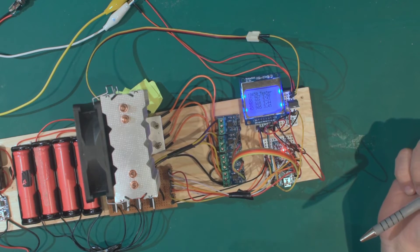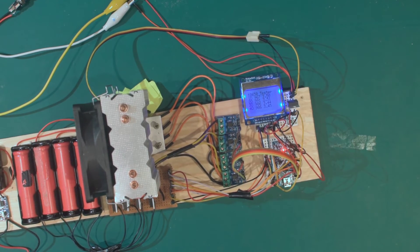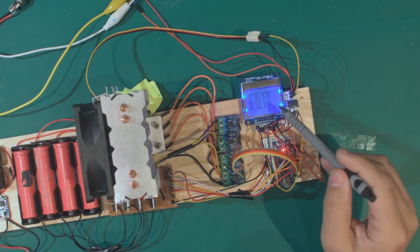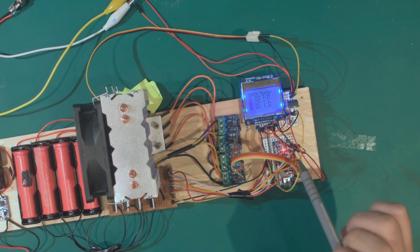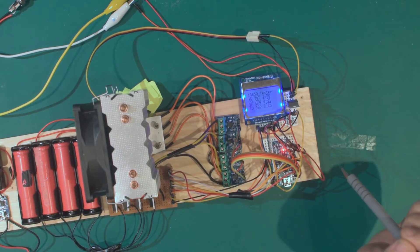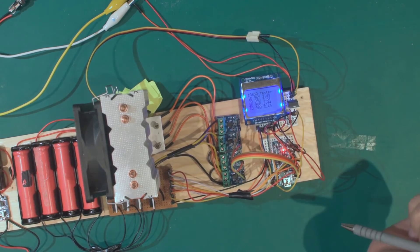Now I have that displaying here. There's four batteries currently under test. It's displaying the battery number, D for discharge, the current milliamp power capacity, and the voltage on the right-hand side.